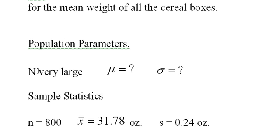We have a very large N for all possible cereal boxes. But we don't know μ or the mean weight of the cereal boxes. We don't know the standard deviation of the cereal boxes. In the sample statistics, we know we have n equals 800. X bar, which is the mean of the sample, is 31.78. And the standard deviation of the sample is 0.24 ounces.